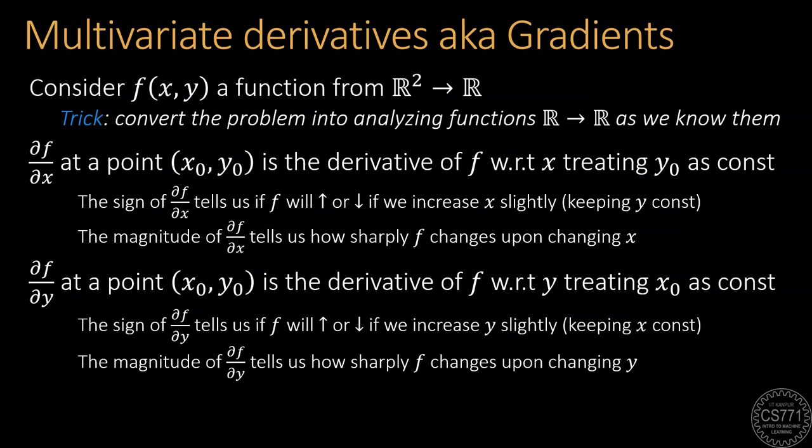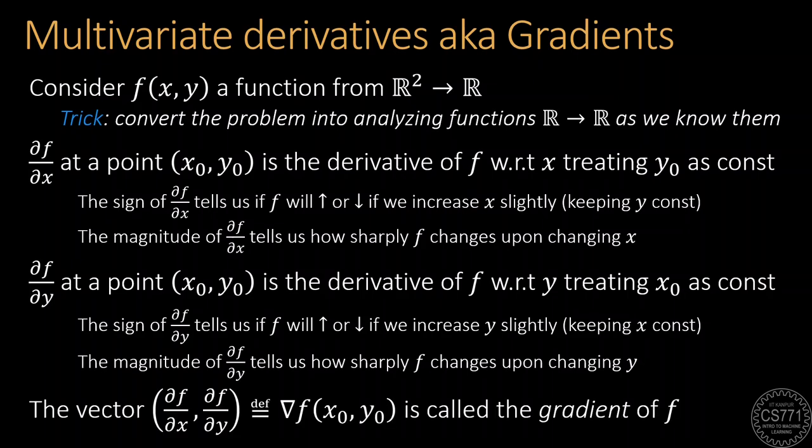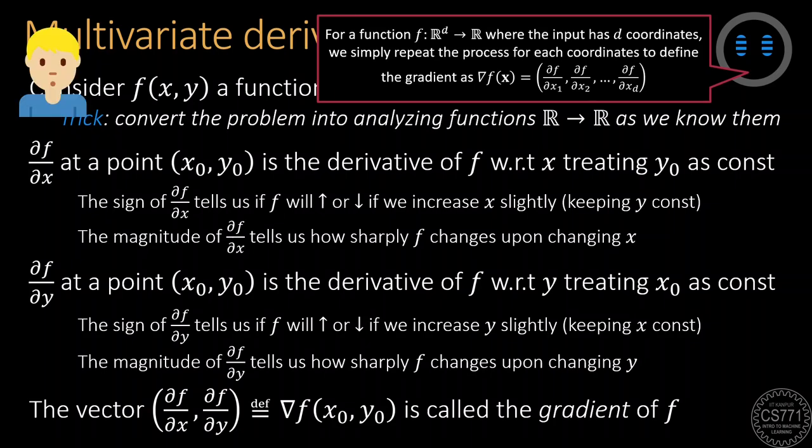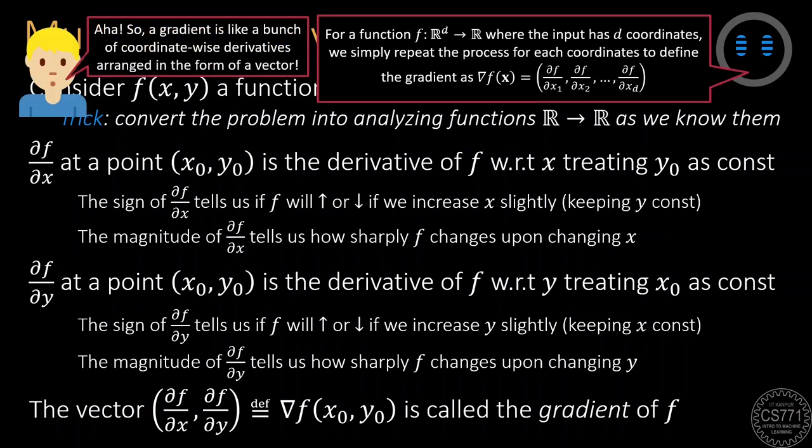Note that these partial derivatives are just real numbers with a sign and magnitude. To make calculations easier, we collect all the partial derivatives in a vector which is called the gradient of the function. This process extends to high dimensions as well, and if working with d-dimensional inputs, we will simply choose one coordinate at a time and freeze all other d-1 coordinates and repeat the process d times.